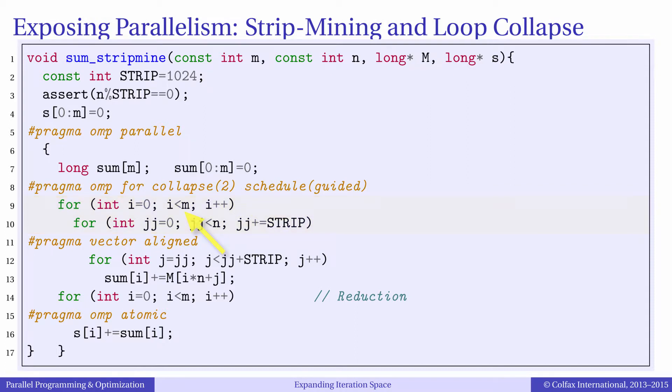So we will have in total m multiplied by n divided by strip iterations distributed across threads, which for our parameter range is in the thousands. This should be enough to keep around 240 logical processors in an Intel Xeon Phi coprocessor occupied.